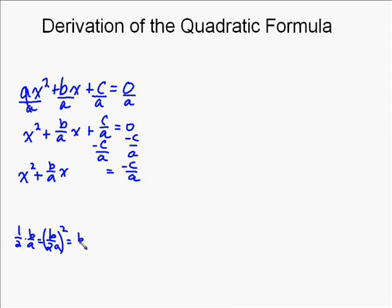Remember, complete the square, you take half the middle term. Well, that's like multiplying 1/2 times b/a, which equals b/2a. And then you've got to square that middle term. So b/2a squared equals b squared over, well, 2a squared is 4a squared. So I add that to the left side. And if I'm going to add it to the left side, I also have to add it to the right side.